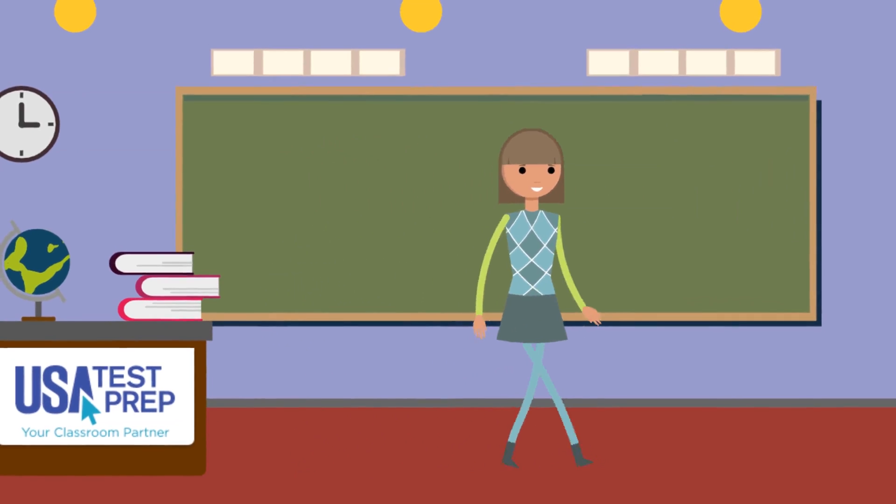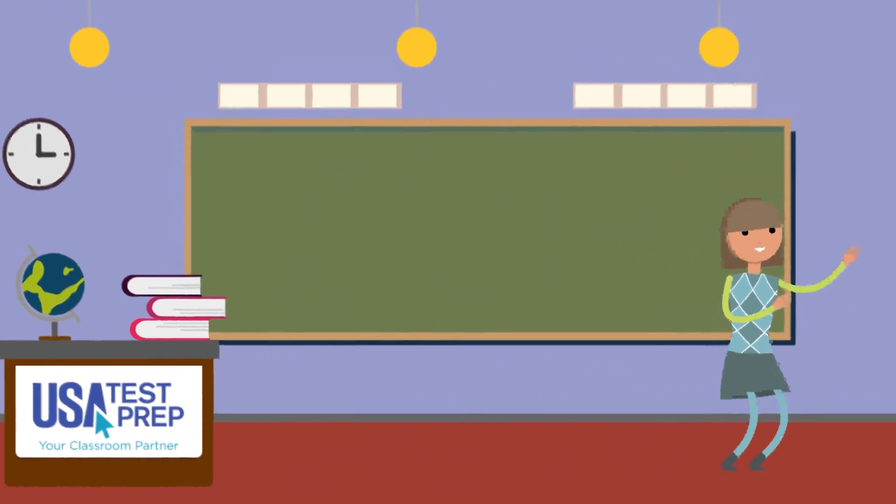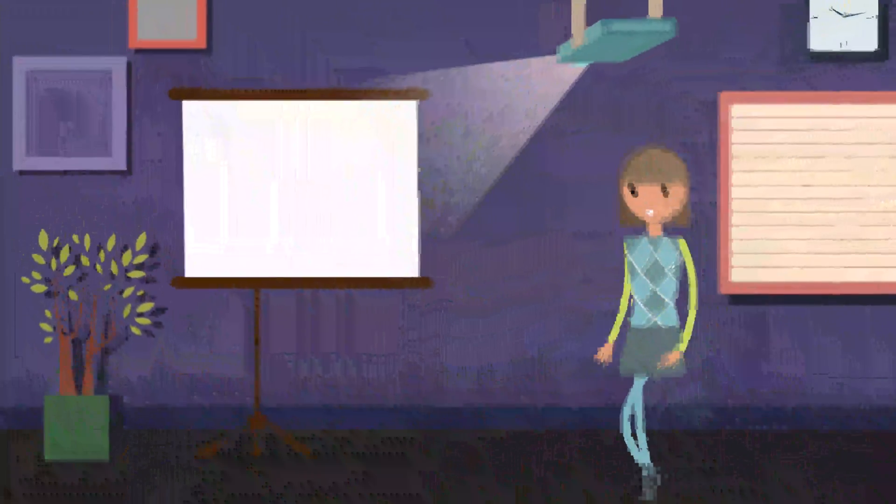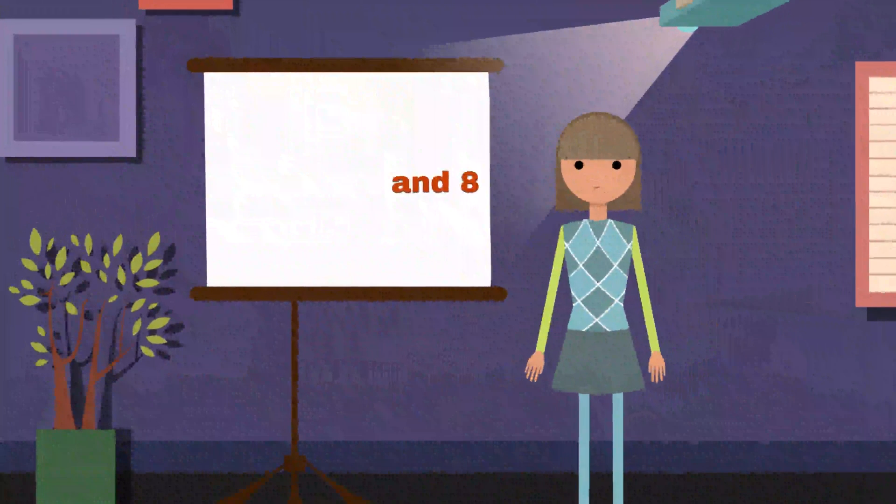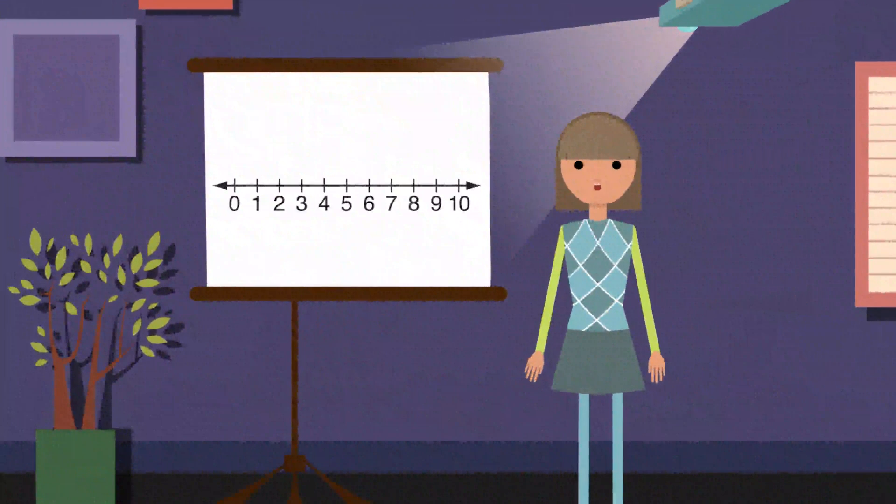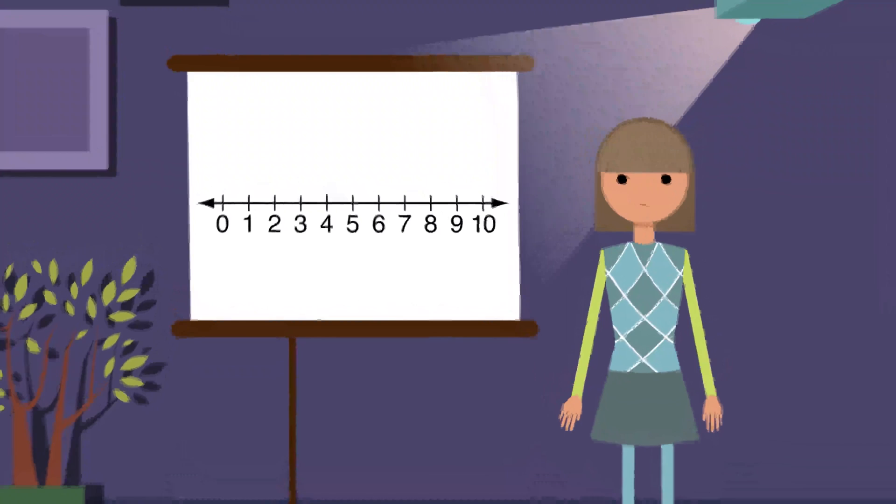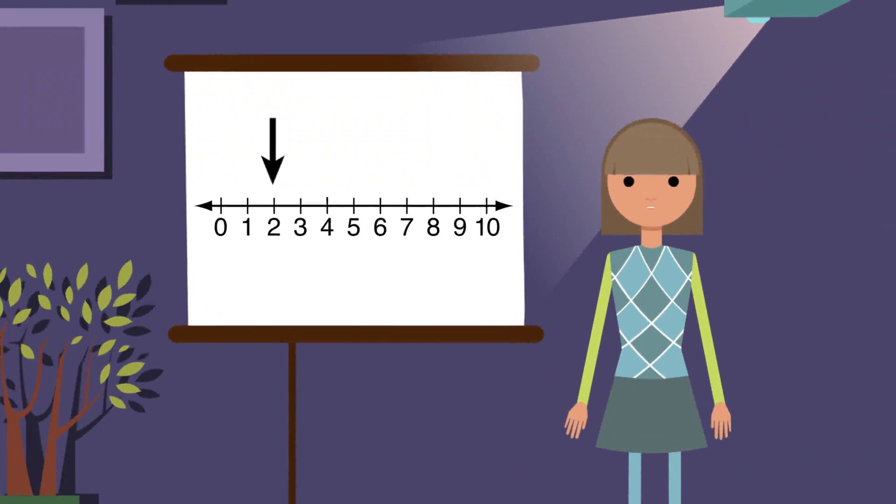Let's head to another room to learn more about using number lines. Follow me! We can use number lines to compare numbers. Let's compare the numbers 4 and 8. First, start with 0 and count up to 4 with me. Ready? 1, 2, 3, 4. Perfection!